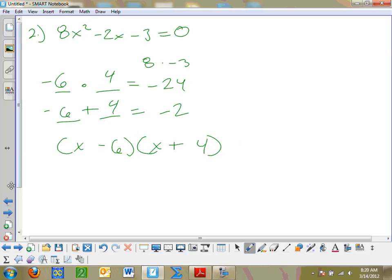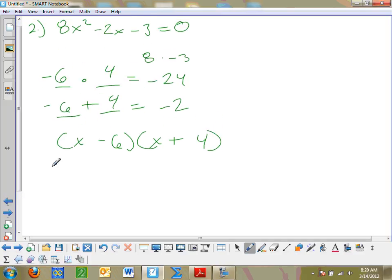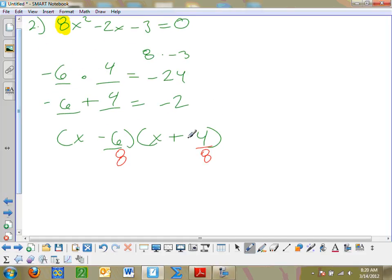Those are my numbers that go inside my parentheses here, negative 6 and 4. So I get x minus 6 and x plus 4. Now I'm not done. I initially multiplied by this 8 to get those negative 24. I've got to divide out by that 8. Whenever you have a leading coefficient that's not 1, in this case it was 8, I have to go ahead and divide that 8 on both of these.